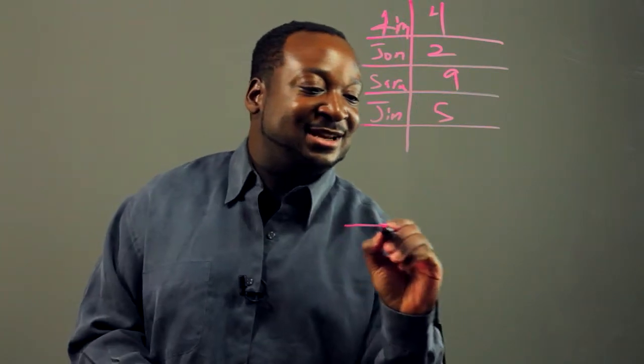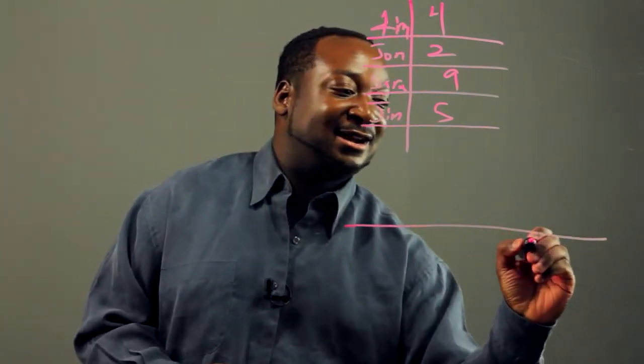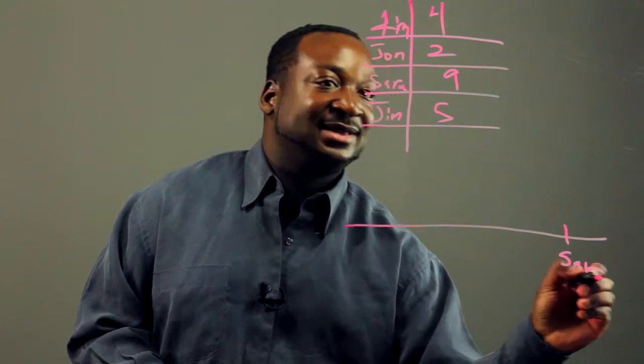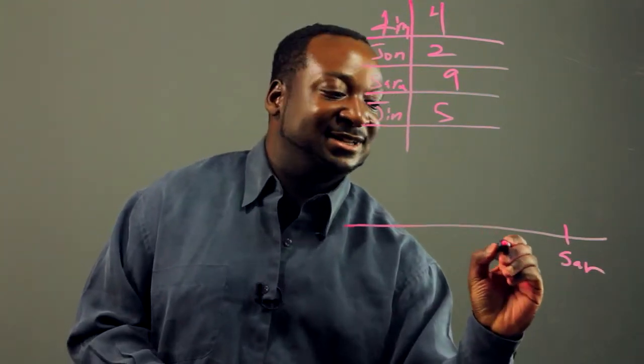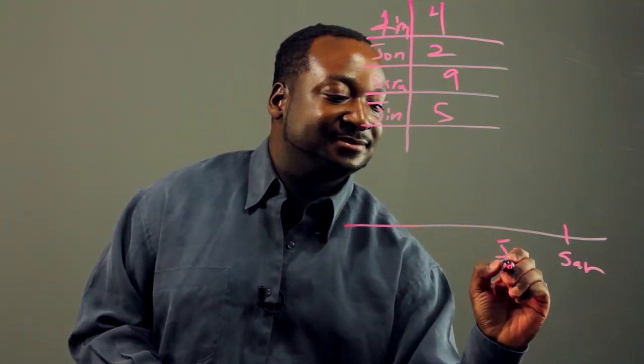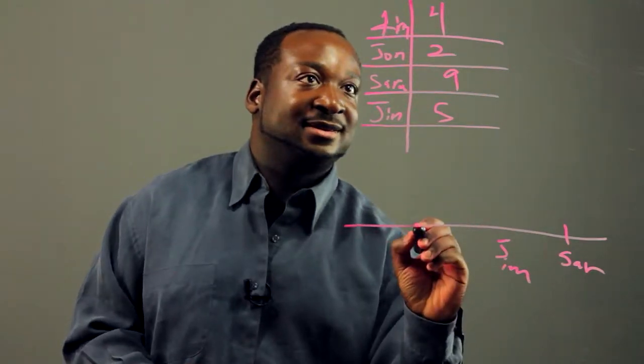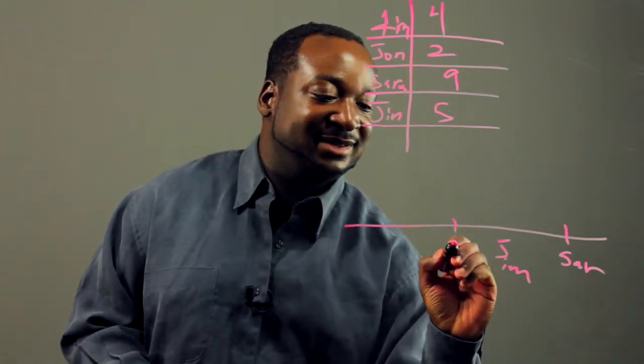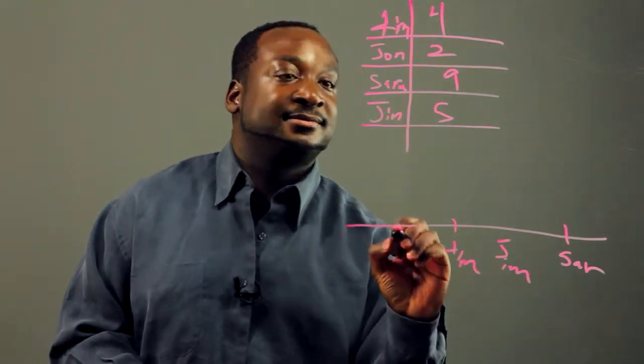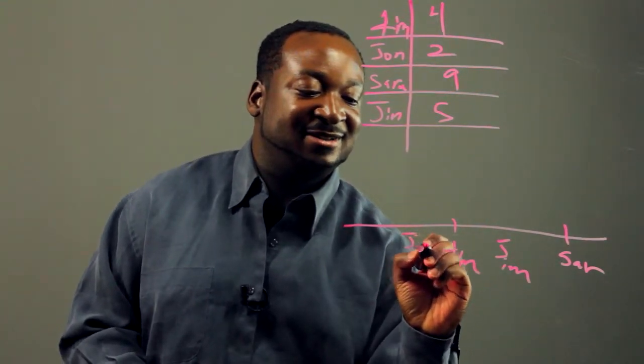But if we add a number line, Sarah should be up here and you'll have Jim right here. You'll have Tim here. And you'll have John right here.